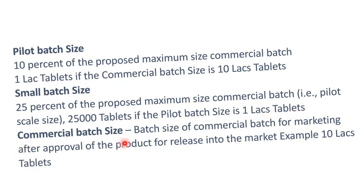The commercial batch size is the batch size used for manufacturing after approval of the product for release into the market — that is, the quantity manufactured in a single batch run. You should also understand what a batch is: a batch is the amount or number of units processed in a single run or unit operation.